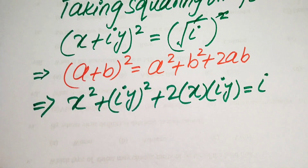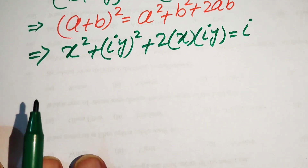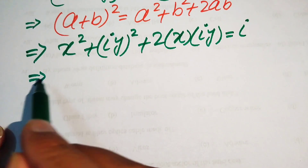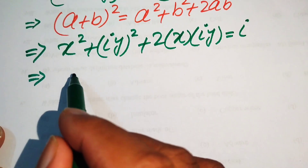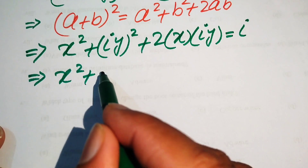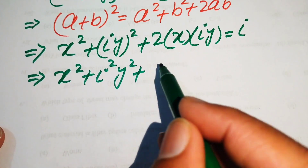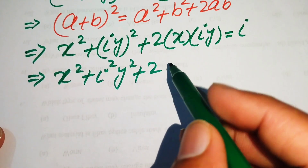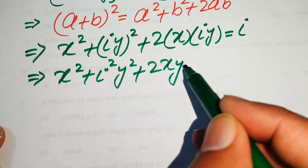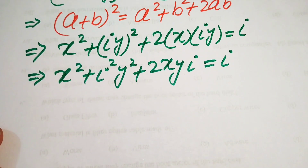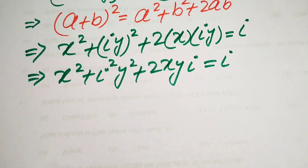In the next step we separate the square on both terms, writing it as x squared plus iota squared y squared plus two x y times iota, and this equals iota.